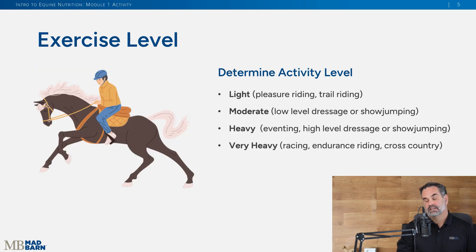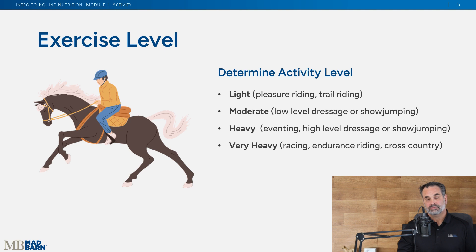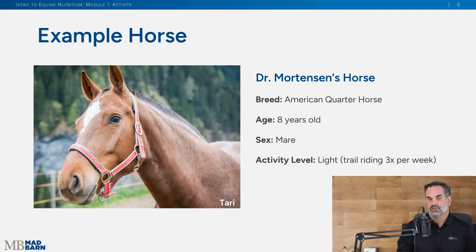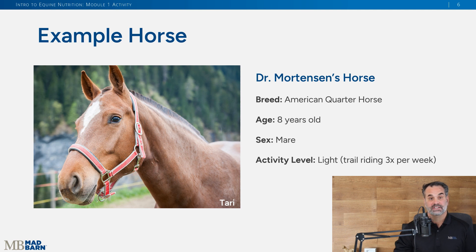The next aspect you need to identify is the level of activity. How much are you exercising? Is it light, moderate, heavy, or extreme? For me, looking at Tari, we ride a little bit each week, so it's light. Every now and then I like to go canter and we push her a little bit, so it could get into that moderate range, but overall her exercise level is light and we'll keep it at that for these discussions and activities.